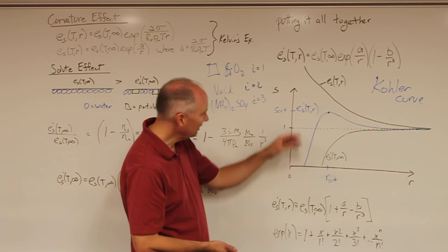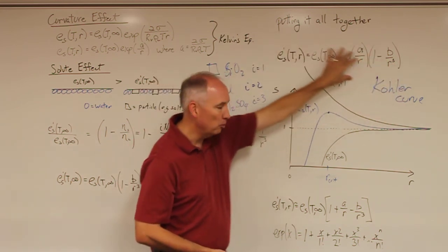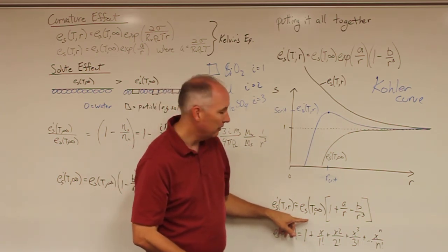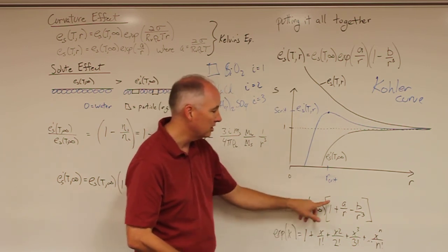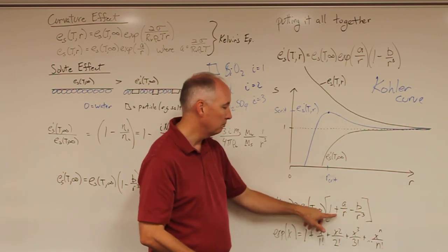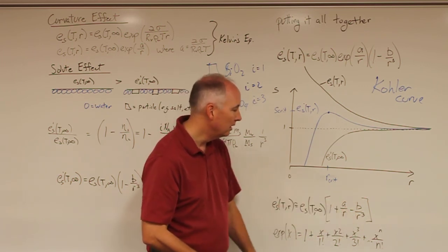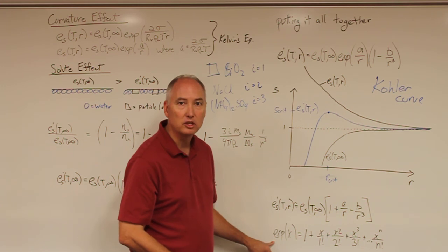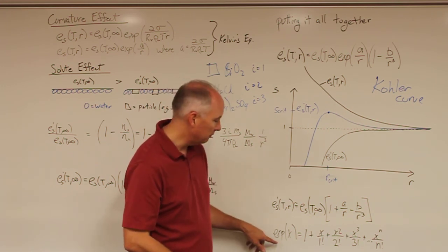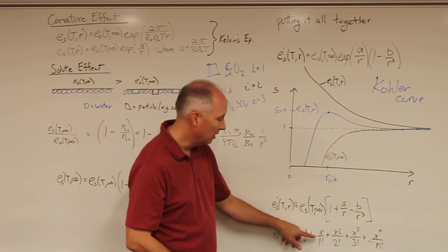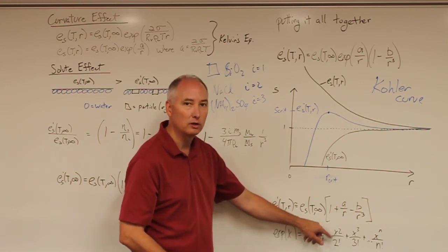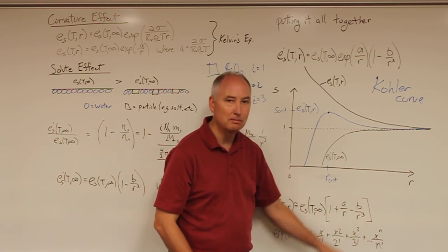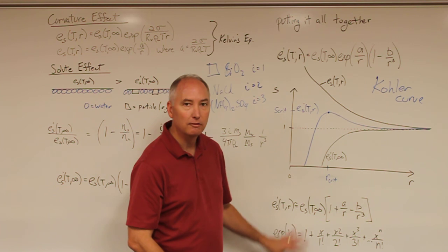A very good mathematical exercise — and I'll probably assign it as homework — is to take this equation and rewrite it in its most common form, where E sub s prime of T of R is approximately equal to the saturation vapor pressure of pure water over a plain surface times the correction factor 1 plus A over R minus B over R cubed. In order to do that transformation, you're going to have to use the series expansion for the exponential function: e to the x equals 1 plus x over 1 factorial plus x squared over 2 factorial plus x cubed over 3 factorial, and so on to infinity.